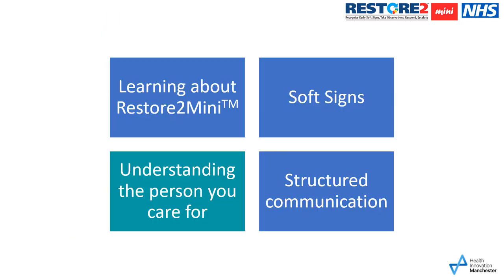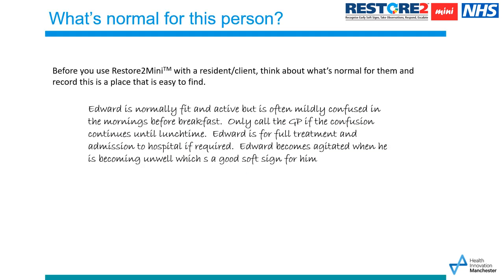In this section, we will help you understand what information you should know about the person you care for. As carers, you know your residents best. Now that you are more familiar with soft signs of deterioration, it's important to think about what would be normal for your residents and record this so that others don't misinterpret soft signs. For example, agitation is recorded as a clear soft sign for Edward in his care records.